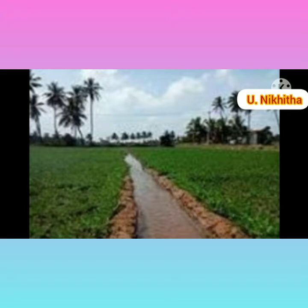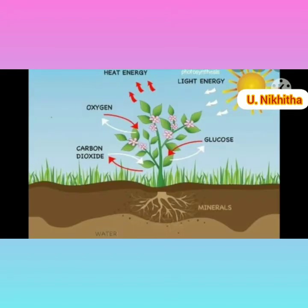Irrigation helps to grow agricultural crops, maintain landscapes, and restore disturbed soils in dry areas and during periods of less than average rainfall. Plant nutrients are the chemical elements that are essential to the nutrition and plant health.